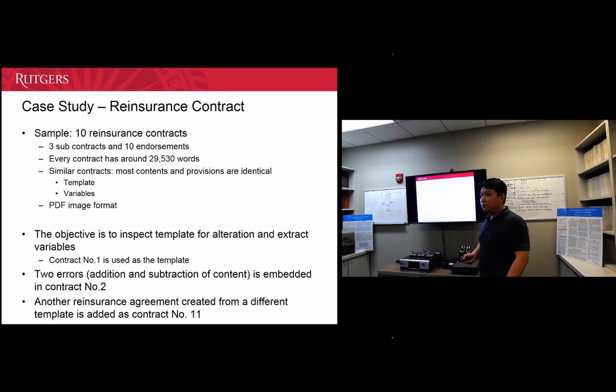We used ten reinsurance contracts obtained from one of the clients in one of the Big Four audit firms. We set contract number one as our original template, manually embedded two errors in contract number two, and also included a contract generated from a different template as contract number eleven.